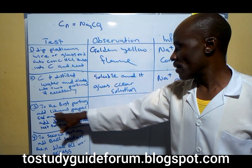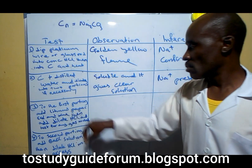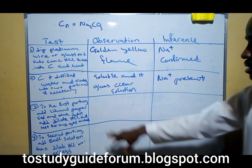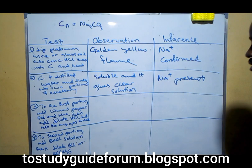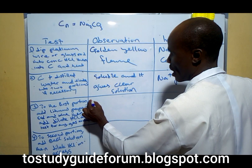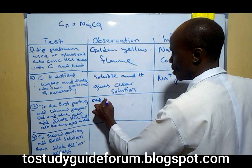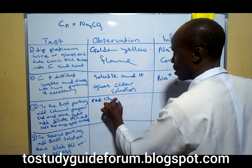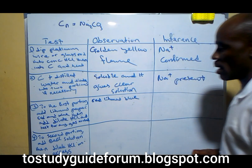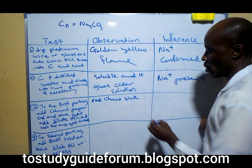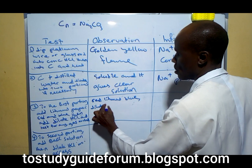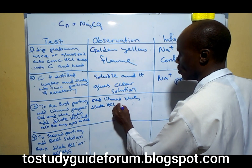To the first portion, add litmus paper — red and blue — then add dilute hydrochloric acid and test for any gas evolved. We add litmus paper and it turns red. On addition of dilute hydrochloric acid, we notice an evolution of gas.